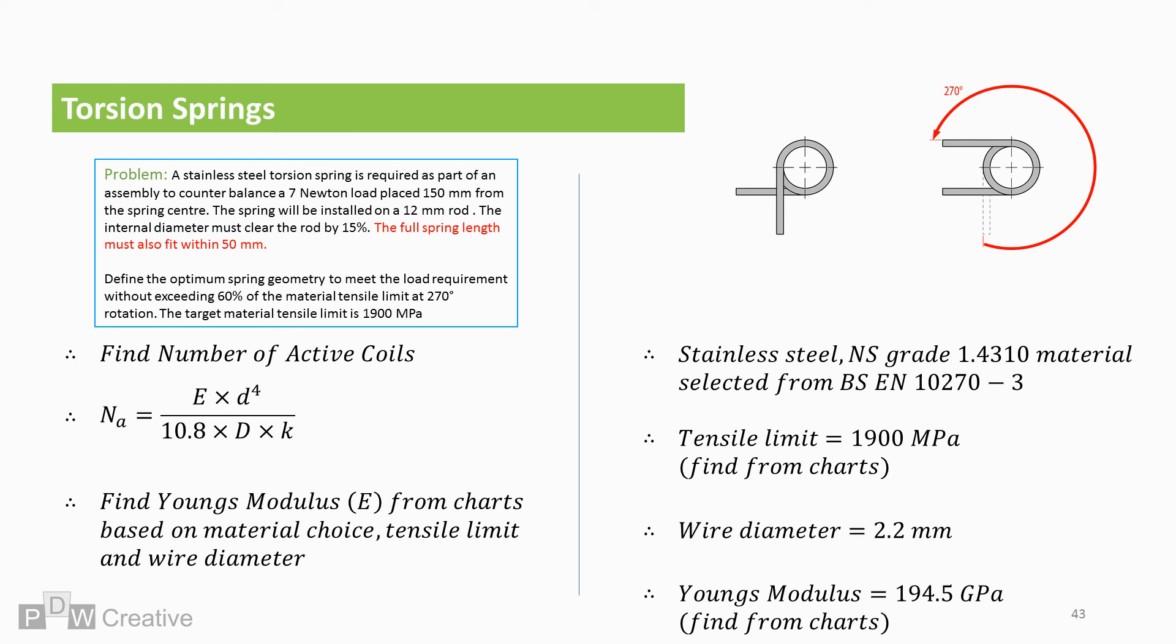The problem asks for a stainless steel spring. We can find the Young's modulus for any given spring steel from material charts. The stainless steel I'm selecting is a common type specified for springs in BS EN 10270 part 3. I already know my tensile target, but if not known, we can find the tensile limit from charts based on the wire diameter.